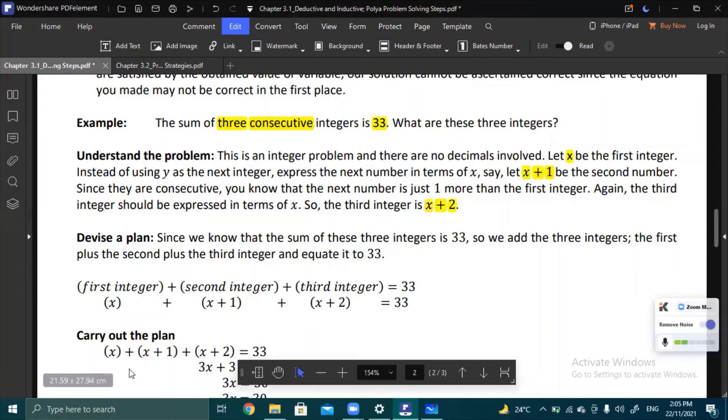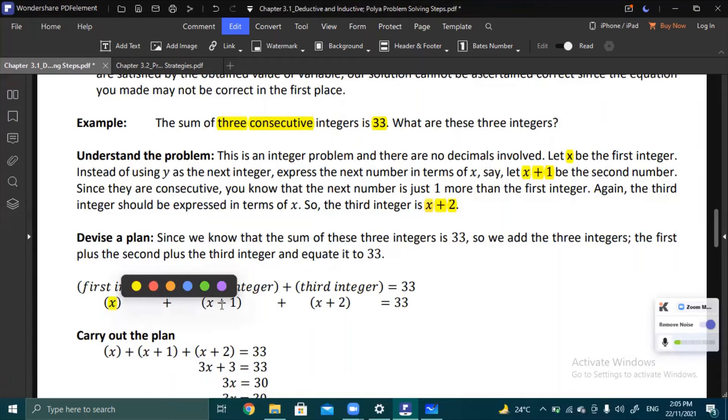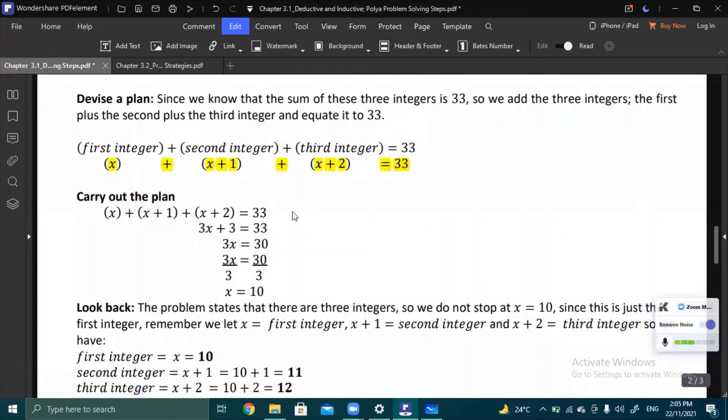Since we know that the sum is 33, we equate it to 33. The solution is: x plus (x plus 1) plus (x plus 2) equals 33. This is the working equation. We can combine the variables. Notice they have the same exponent of 1, so we can add them normally. Since there's no coefficient written, it's understood to be 1. We get 3x. Then combine the whole numbers: 1 plus 2 is 3.